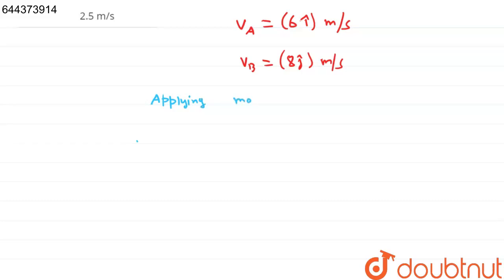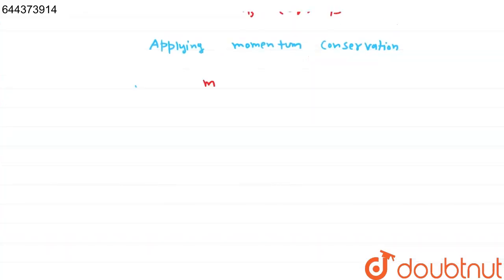Applying momentum conservation, we get m_A v_A plus m_B v_B equals (m_A plus m_B) V, and suppose the final velocity will be V.